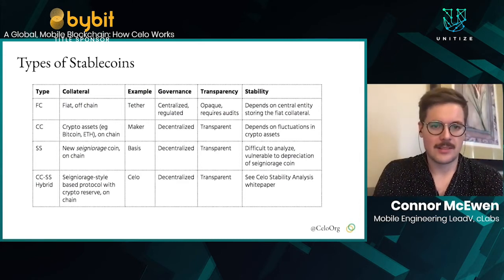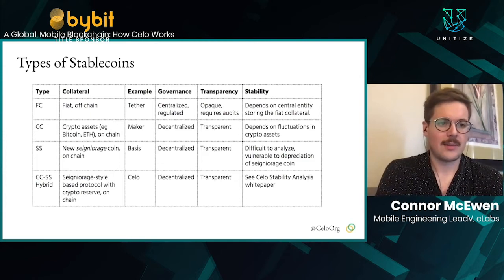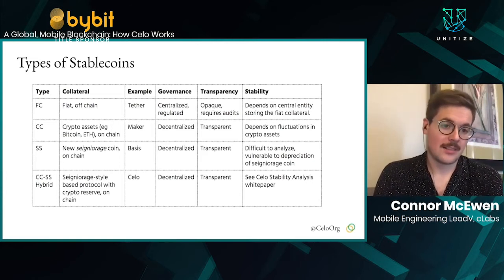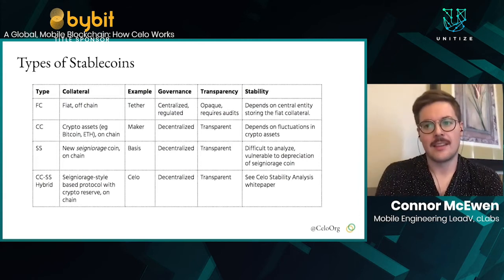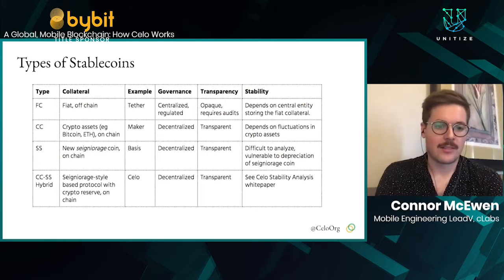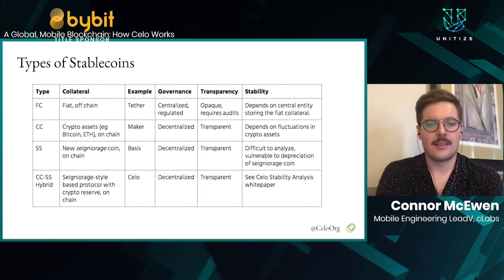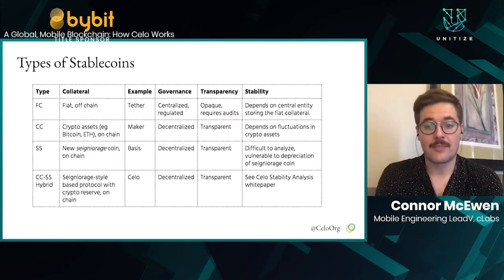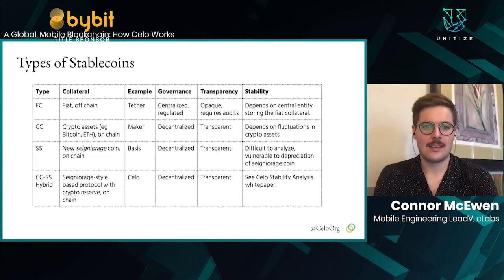There are a couple types of stable coins you might be familiar with, and the important thing to think about is how they're collateralized. First, Tether is collateralized with fiat currency off-chain. There's a bank somewhere holding U.S. dollars, and then there's a corresponding blockchain — the Tether blockchain — which has an amount of Tether USDT equivalent to the amount of fiat currency held in the bank. Unfortunately, that's a pretty centralized system and requires trust of whatever entity is holding that fiat currency.